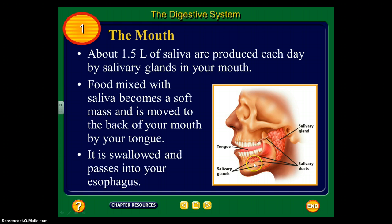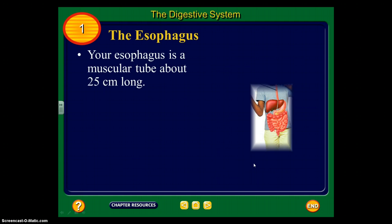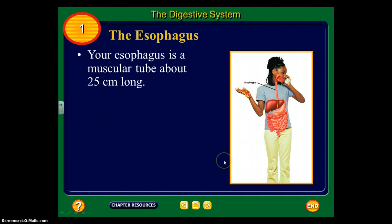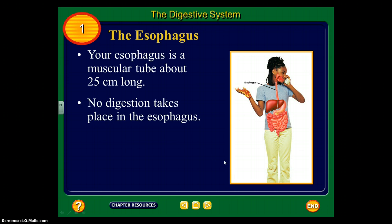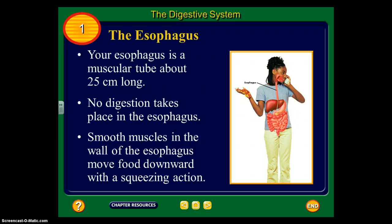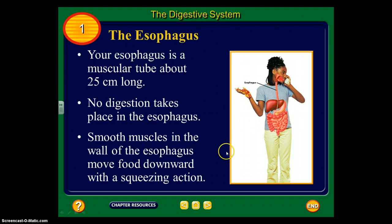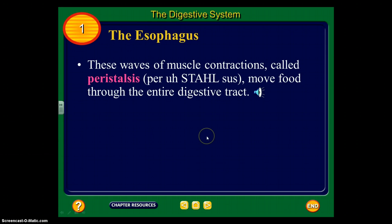Our esophagus is about 25 centimeters long. There isn't really any digestion that takes place in the esophagus, but you could consider it slightly mechanical because the smooth muscles in the wall of the esophagus move the food downward with a squeezing action — so that squeezing could be seen as a little bit of mechanical digestion, though technically not part of the digestive process.